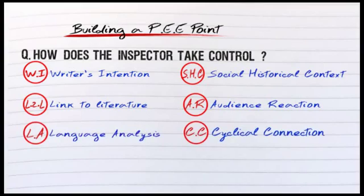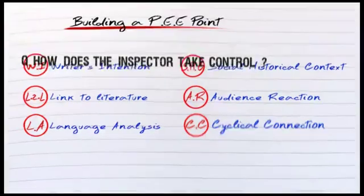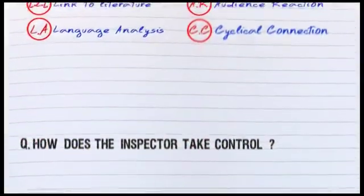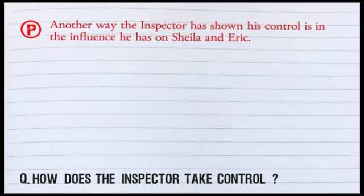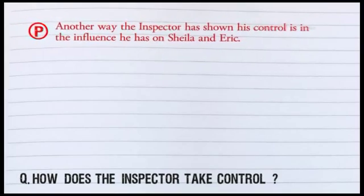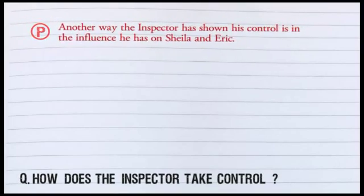So let's imagine we're doing this question: how does the inspector take control? I'm going to imagine that I'm halfway through my essay, or maybe three quarters of the way through. So I'm going to start with: 'Another way the inspector has shown his control is in the influence he has over Sheila and Eric.' And that's my point — clearly demarked.